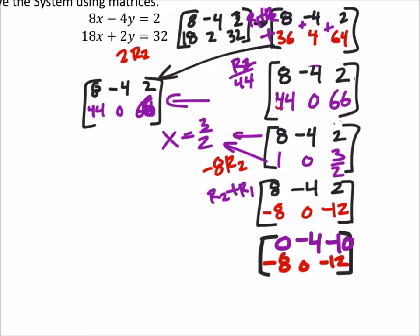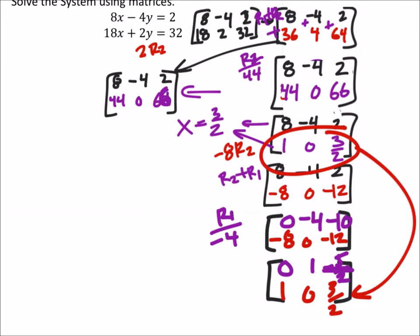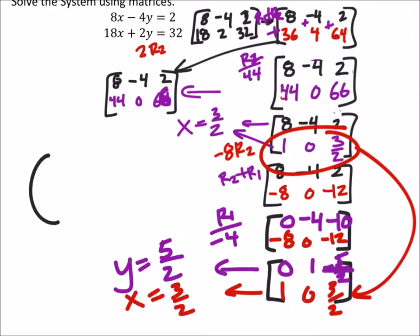And so, to solve that top row, I would take row 1 and divide it by negative 4. And this gives me my final answer for this problem. So this one tells us that y is a positive 5 halves, and this bottom row tells us that x is 3 halves. And so we would get the solution 3 halves and 5 halves.